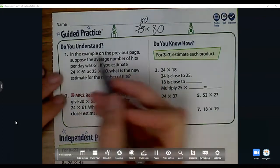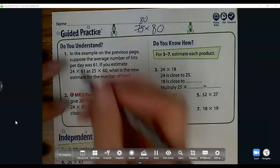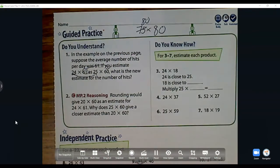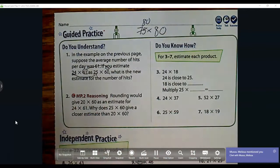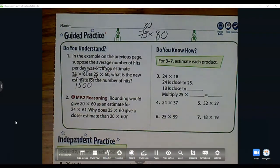Let's begin with our first problem. In the example on the previous page, suppose the average number of hits per day was 61. If you estimate 24 times 61 as 25 times 60, what is the new estimate for the number of hits? So we're changing 24 to 25 and 61 to 60. We now have 25 times 60, which I know in my head: 25 times 4 is 100, and then two more is 50. So that's 1,500 hits per day.